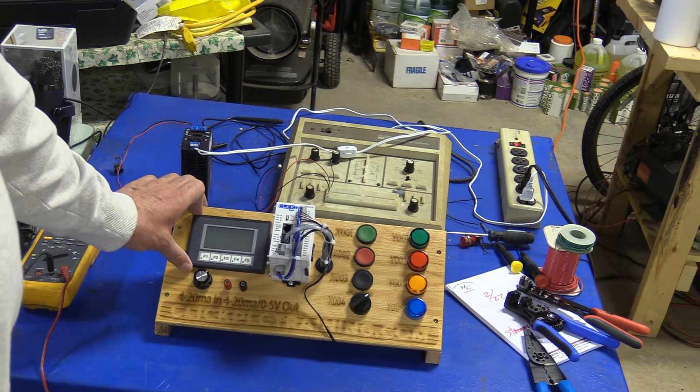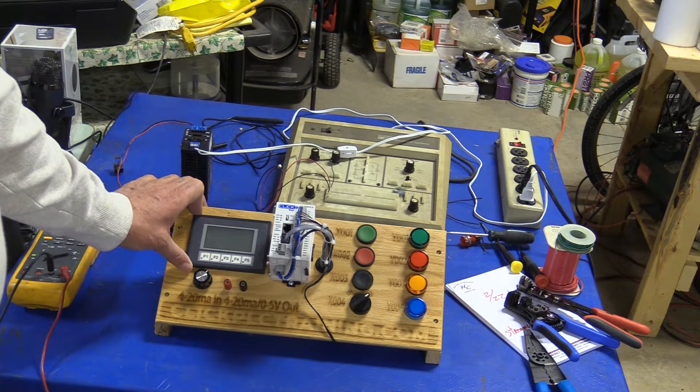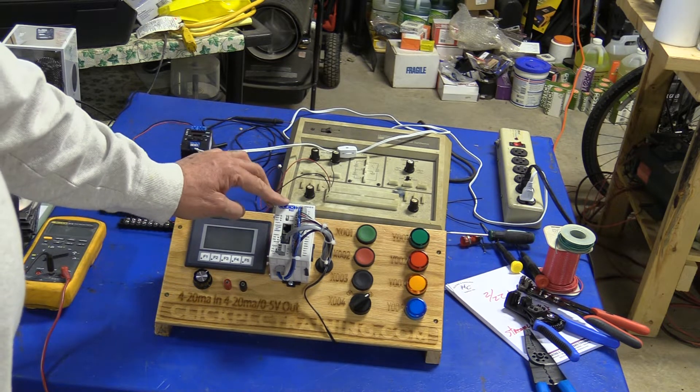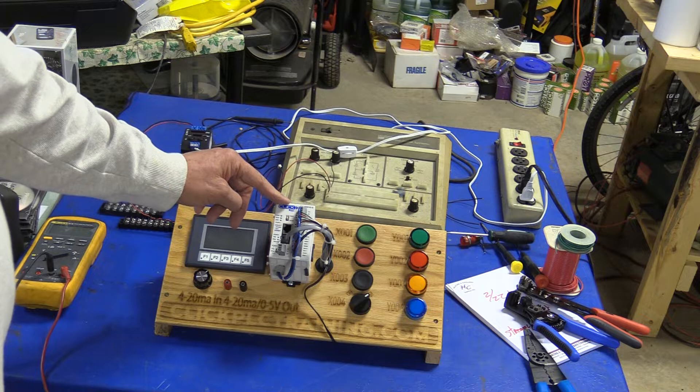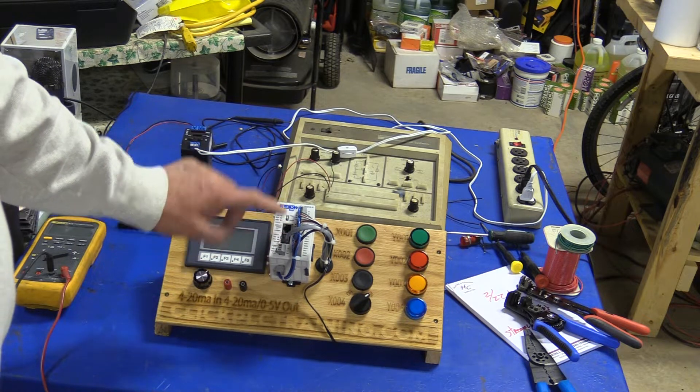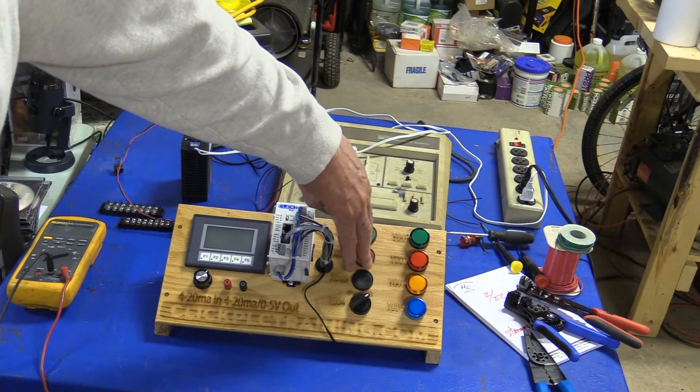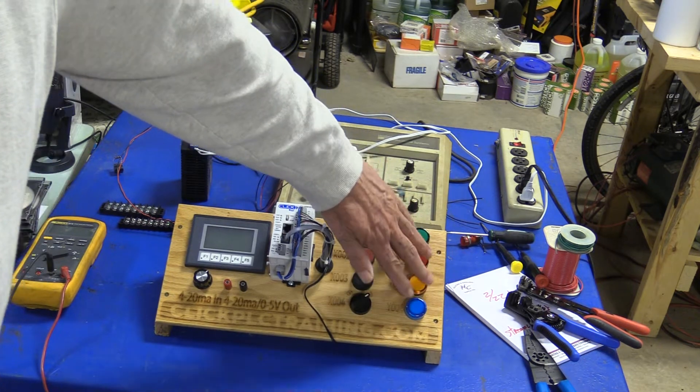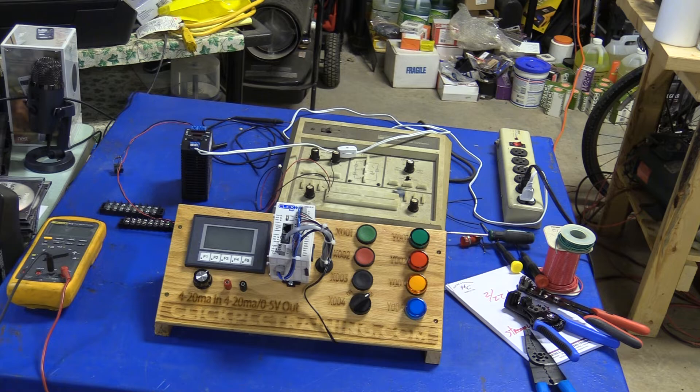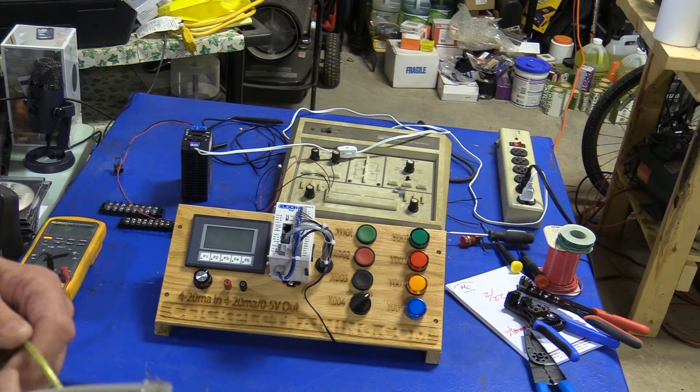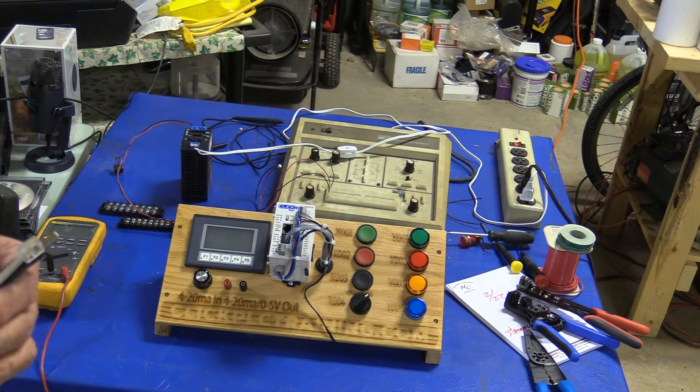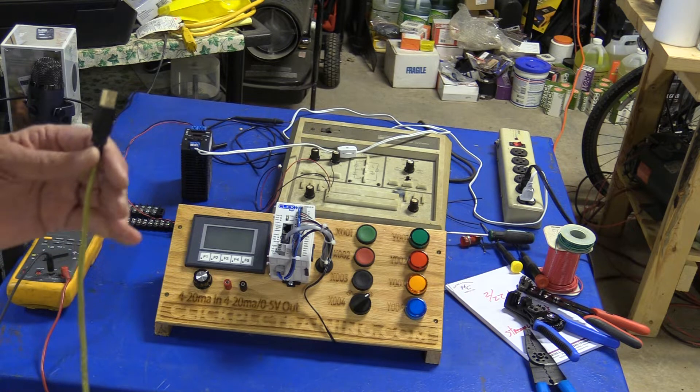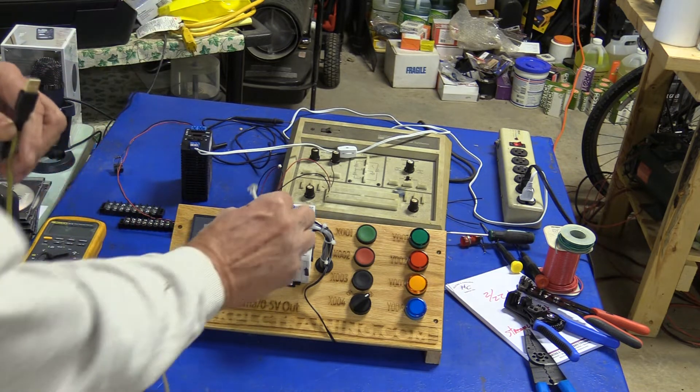It's got a C-more HMI on it, the Click Plus with Ethernet. It has the buttons and switches, lights, et cetera, that you can purchase from Automation Direct.